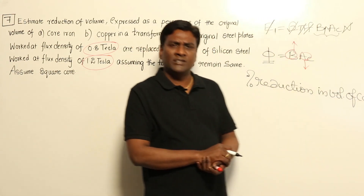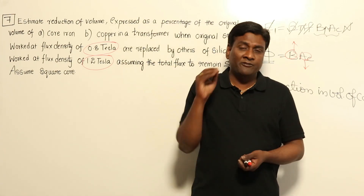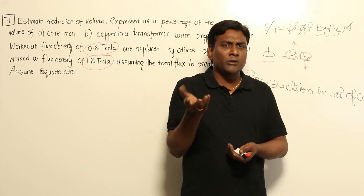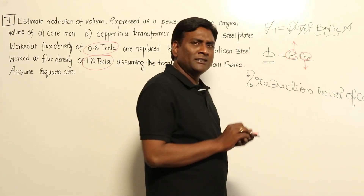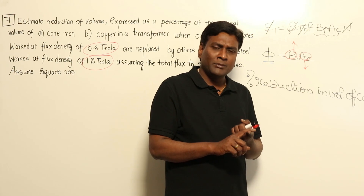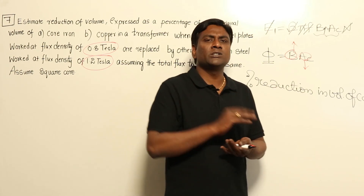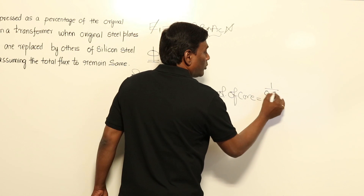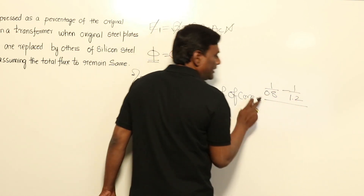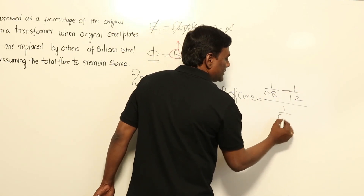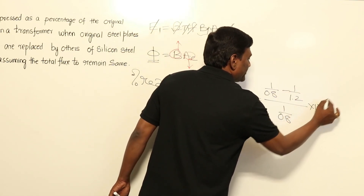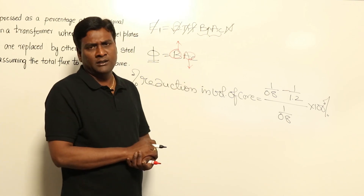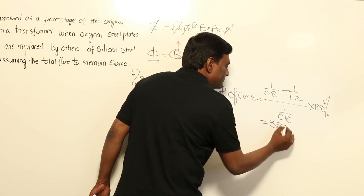I don't want to write any equations here. If flux density is increased by x percentage, area of cross section of core will be reduced by x percentage, so volume of core requirement will be reduced by x percentage. Directly, percentage reduction in volume of core is going to be: original value minus new value, divided by original value, into 100%. So it's going to be (1/0.8 − 1/1.2) divided by (1/0.8) into 100%, which gives 33.3%.